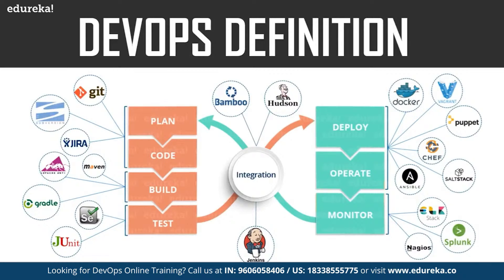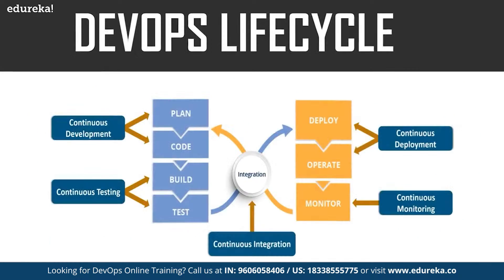As you can see in this diagram, these are the various phases of the DevOps lifecycle: continuous development, continuous testing, continuous integration, continuous deployment, and continuous monitoring. Now let us have a look at each of these phases one by one.